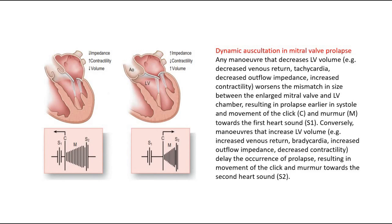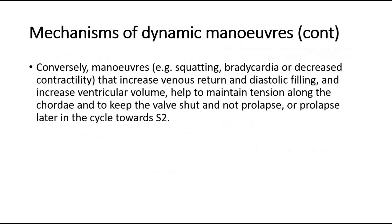Conversely, maneuvers that increase LV volume — such as increased venous return, bradycardia, increased outflow impedance, and decreased contractility — delay the occurrence of prolapse, resulting in movement of the click and murmur towards the second heart sound. Maneuvers such as squatting, bradycardia, or decreased contractility that increase venous return and diastolic filling increase ventricular volume, helping to maintain tension along the chordae and keep the valve shut, or prolapse later in the cycle towards S2.